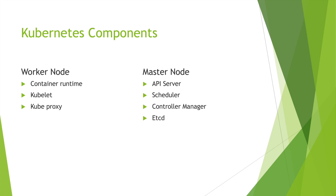Kubernetes comprises master and worker nodes. The worker node is the one that does all the heavy lifting for us, and it consists of container runtime, kubelet, and kube-proxy. Container runtime includes the runtime environment for running containers — for example, Docker or containerd.